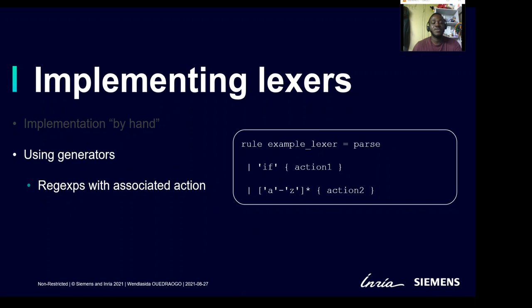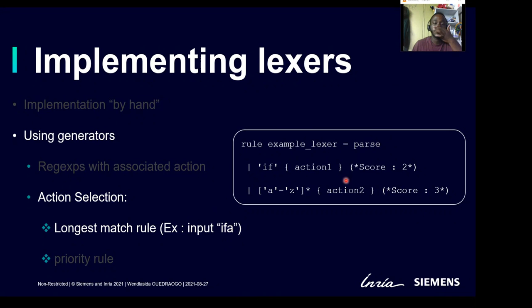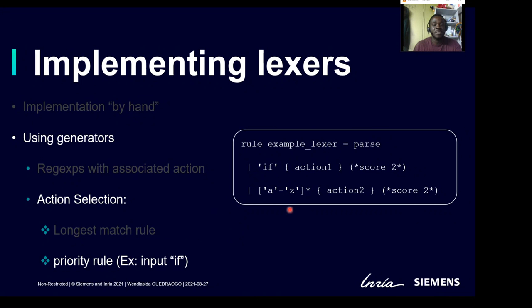Let's look at an example of action selection. Action selection follows two rules: the longest match rule and the priority rule. For the longest match rule, if we have an input like A, I, F, A, the first regular expression can match just the first two characters giving a score of two, but the second one can match the whole string giving a score of three, so action two is executed. The priority rule applies in case of equality: if the input string is just I and F, both regular expressions score two, so we take the first one in order and action one is executed.